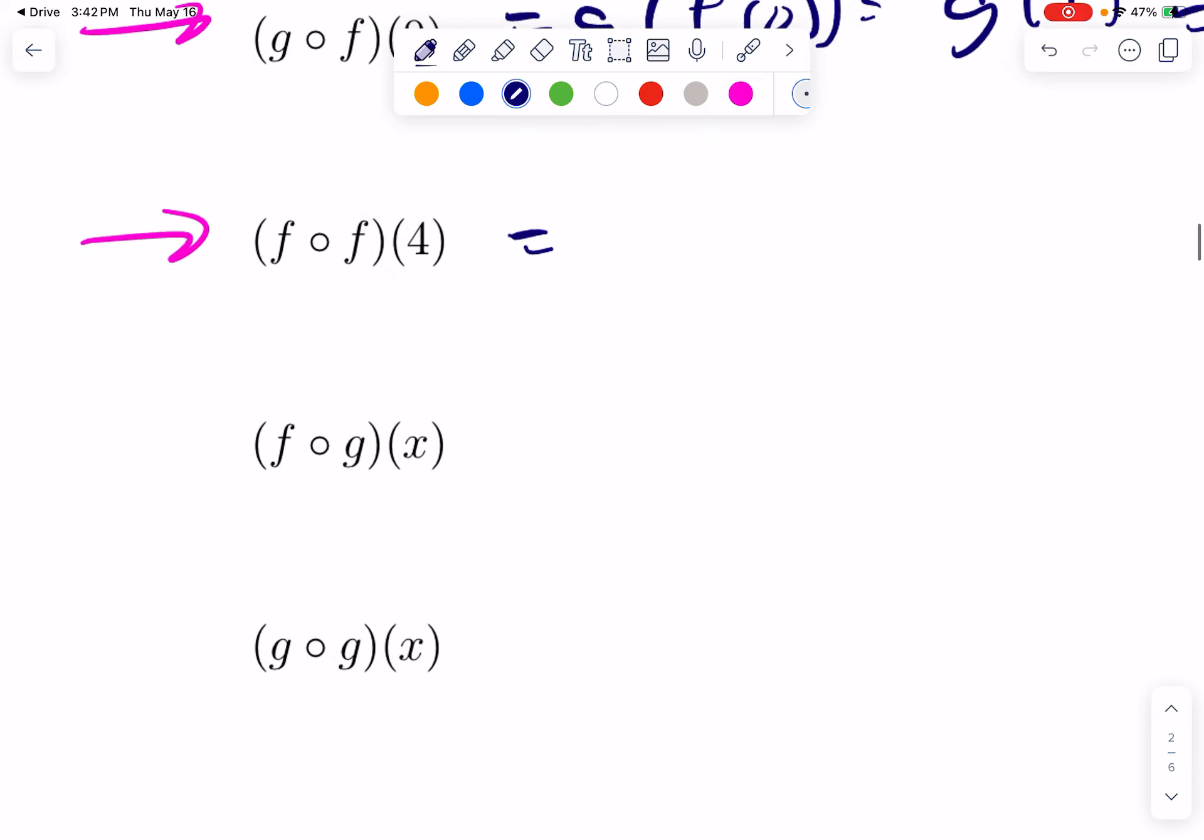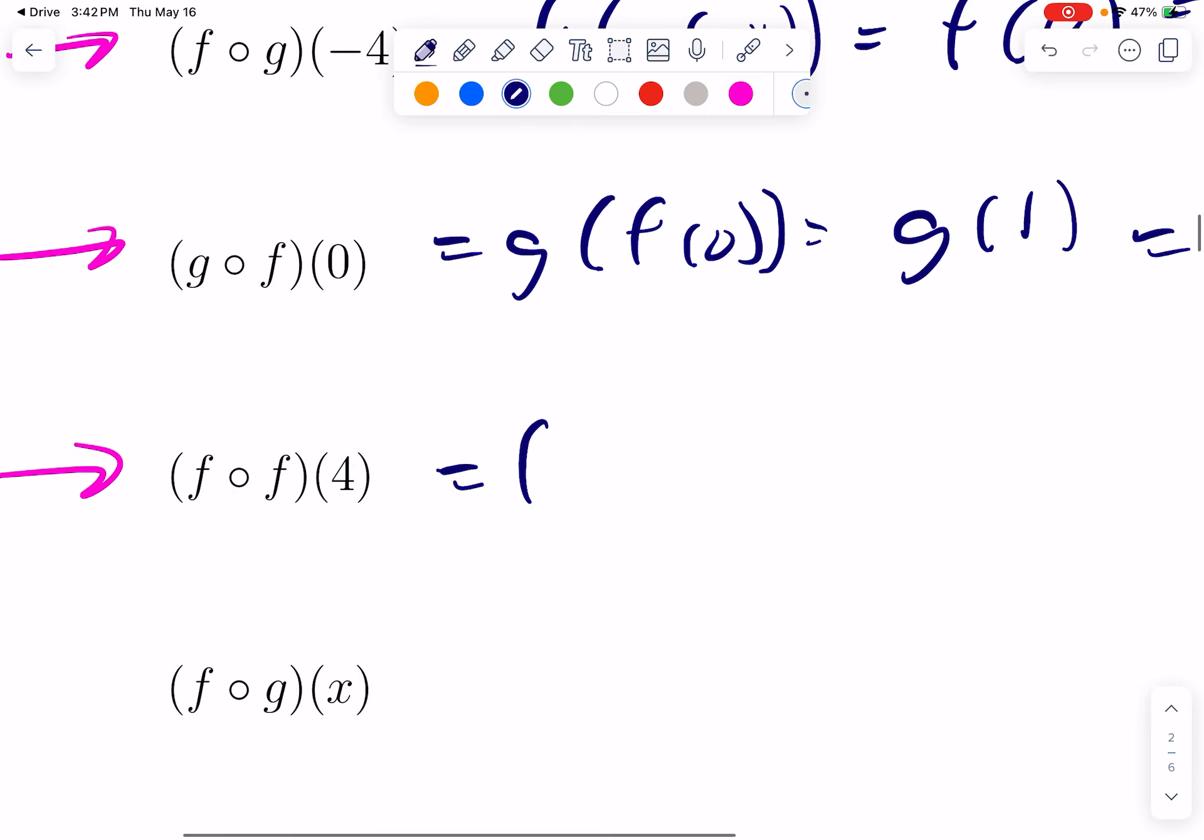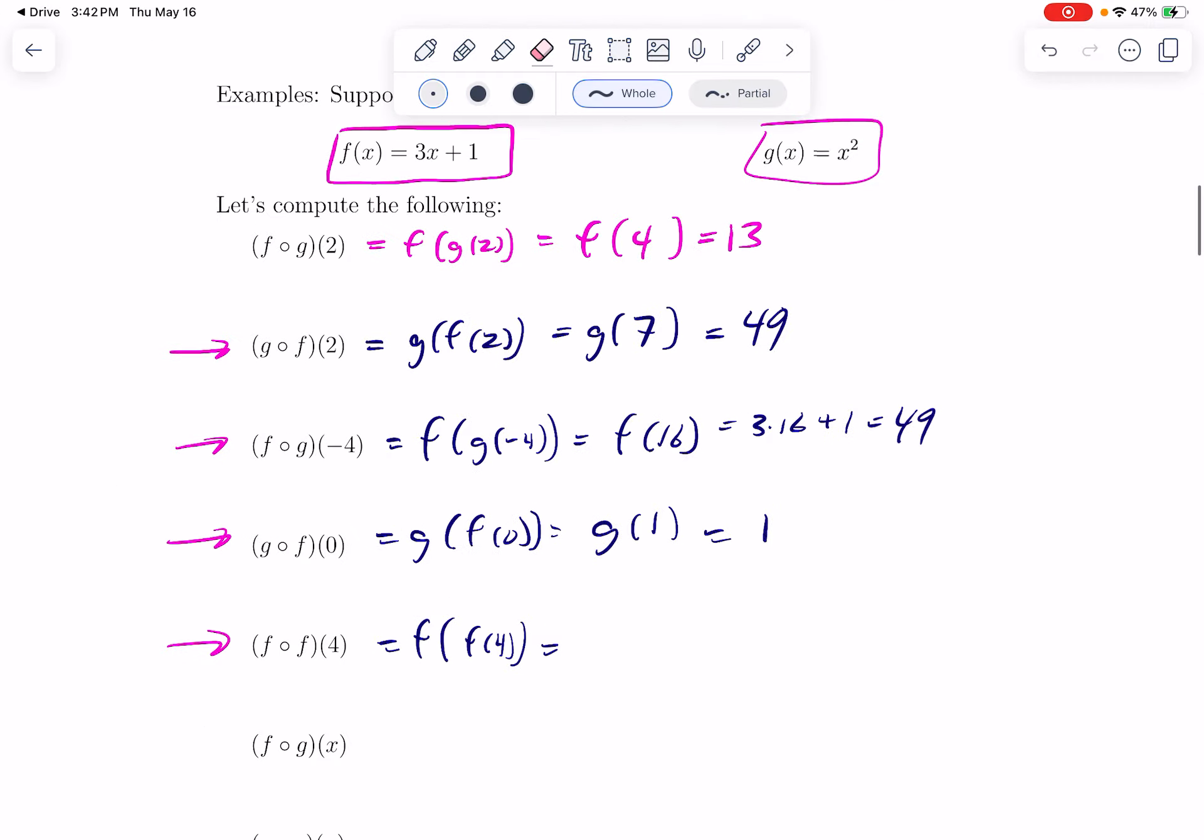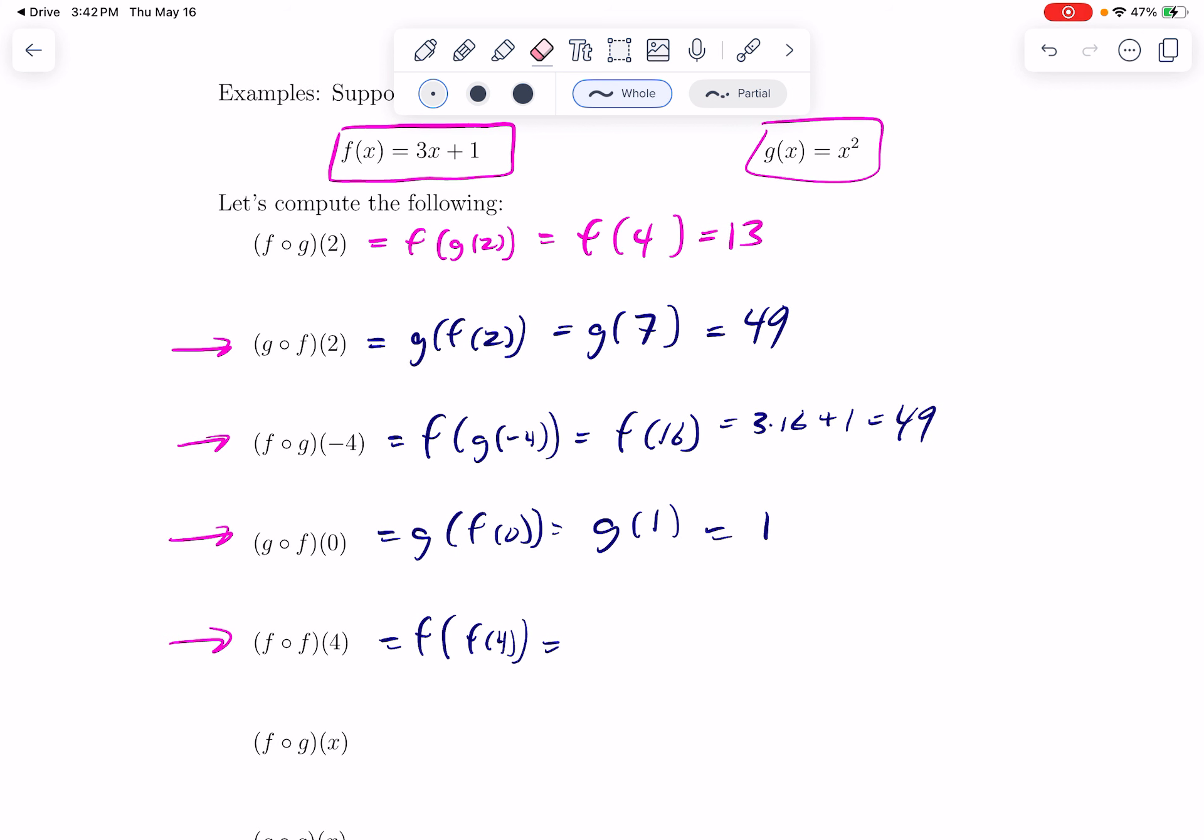And G of 1 is 1. Here it's two F's, but that's okay. That means F of F of 4. F of 4 is 13. So this is F of 13 and F of 13 would be 40.